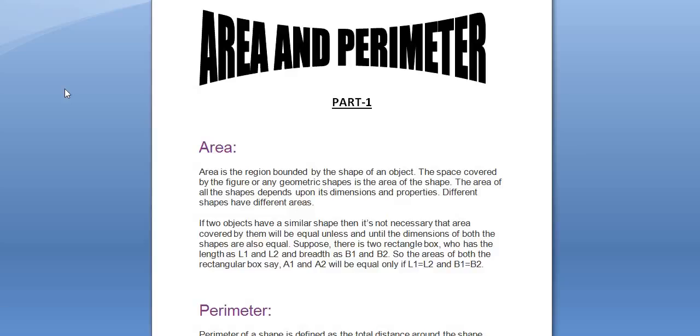If you have two objects of the similar shape, it is not necessary that their area will be equal unless the dimensions are the same of both shapes. If there is a rectangular box of length L1 and L2 and breadth as B1 and B2, the areas A1 and A2 will only be equal if L1 is equal to L2 and B1 is equal to B2.